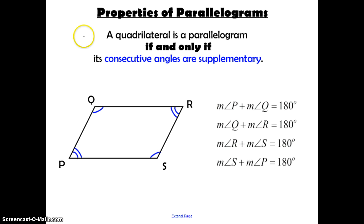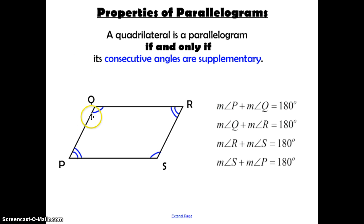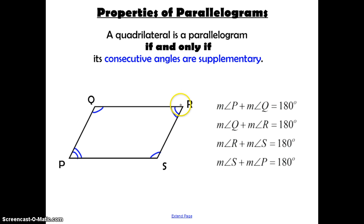The next property states that a quadrilateral is a parallelogram if and only if its consecutive angles are supplementary. Consecutive means in a row, so the measure of angle P plus angle Q equals 180, angle Q plus angle R equals 180, angle R plus angle S equals 180, and angle S plus angle P equals 180.